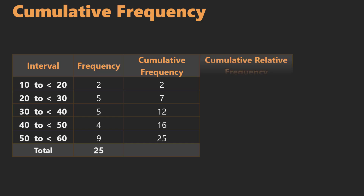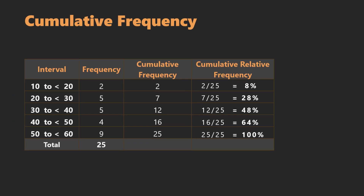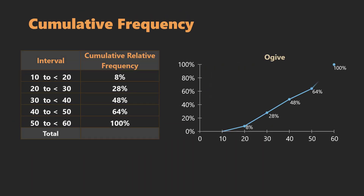We can also calculate cumulative relative frequencies by dividing the cumulative frequencies by the total frequency. Here are the results as percentages — 28% of the data are less than 30, and 64% of the data are less than 50. Graphically, the cumulative frequency distribution is presented in a curve called an ogive. The graph starts at a frequency of 0 for the lower limit of the first class, and cumulative frequencies are plotted against the upper limit of each class. We can use the graph to estimate that the proportion of data less than 35 is about 40%.